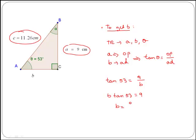We get that b is equal to 9 over tan of 53. If we divide 9 over tan of 53, we get that b is 6.78 centimeters.